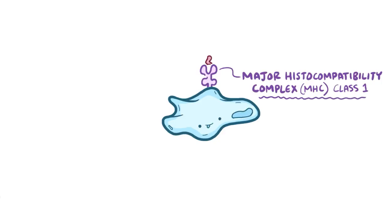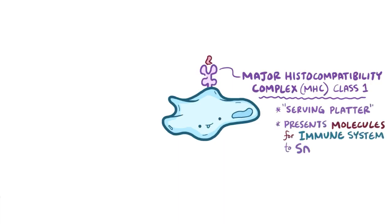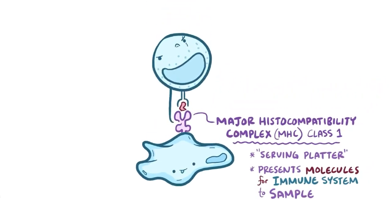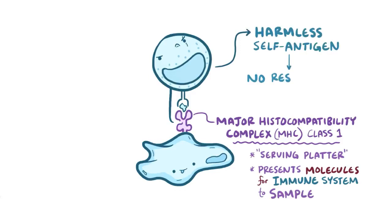These surface proteins act kind of like a serving platter, presenting molecules from within the cell for the immune system to continually sample. Normally though, the molecule is just a sample from the cell, and the immune system recognizes it as harmless, and this is known as a self-antigen, and in this case there is no immune response.